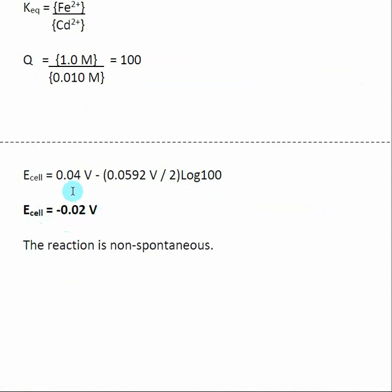Our original E°cell was a positive number, meaning it was favorable or spontaneous. But by changing the concentrations, we caused Ecell to become negative. In doing that, our reaction becomes non-spontaneous or not favorable.